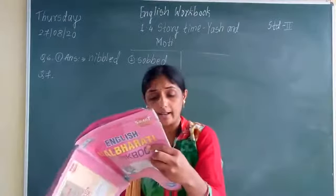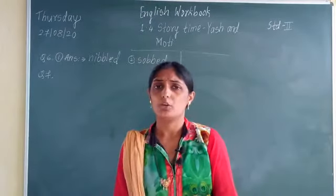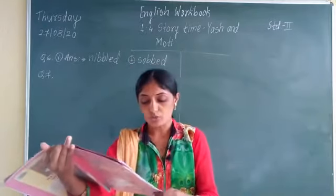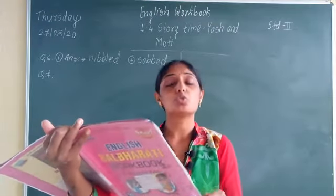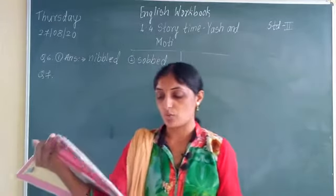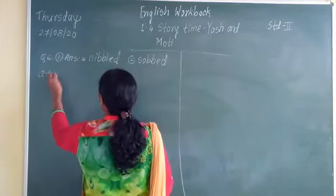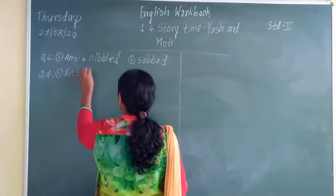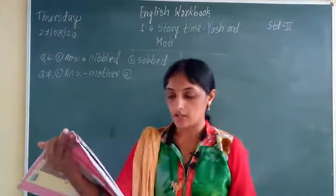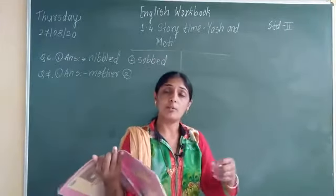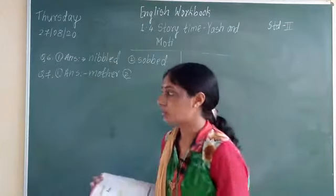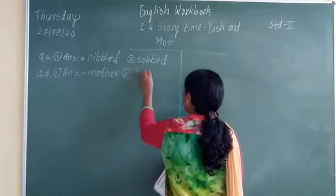Question number seven says: answer in one word or phrase. A phrase means a group of words put together. First question: who bought new shoes for Yes? His mother had bought new shoes — so the first answer is 'mother.' Second question: how did Yes feel when his mother bought shoes for him? He felt happy, so the second answer is 'happy.'